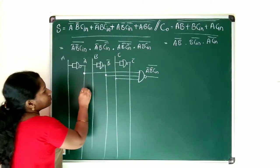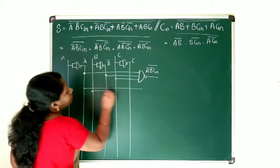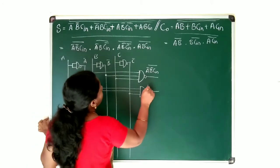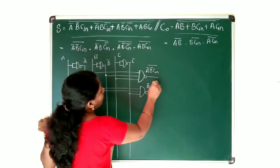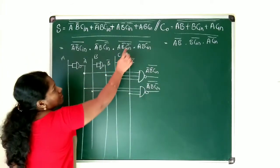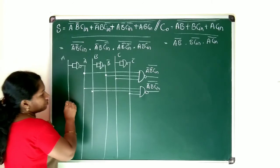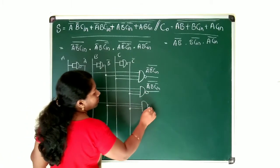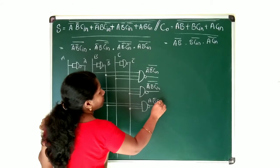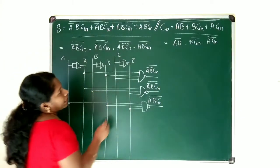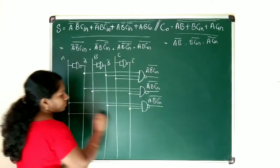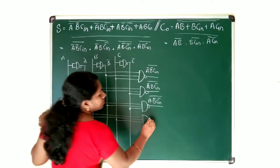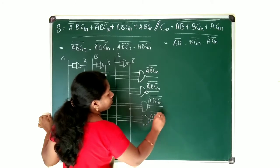Next term: (a̅bc̄_in)̄ — take a̅, b, and c̄_in, connect a NAND gate, giving (a̅bc̄_in)̄. Next: (ab̄c̄_in)̄ — take a, b̅, c̄, connect a NAND gate, giving (ab̄c̄_in)̄. Last term: (abc_in)̄ — take a, b, and c_in and connect a NAND gate, giving (abc_in)̄.